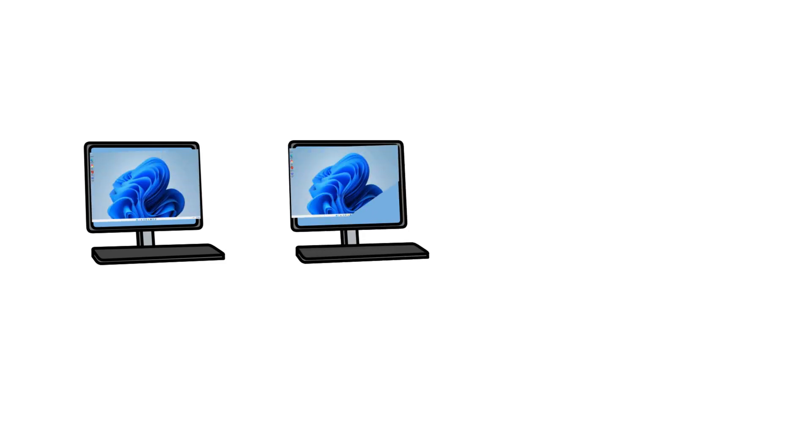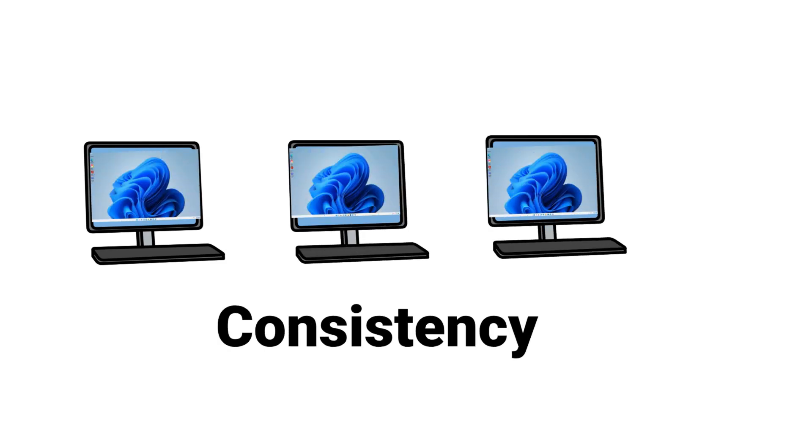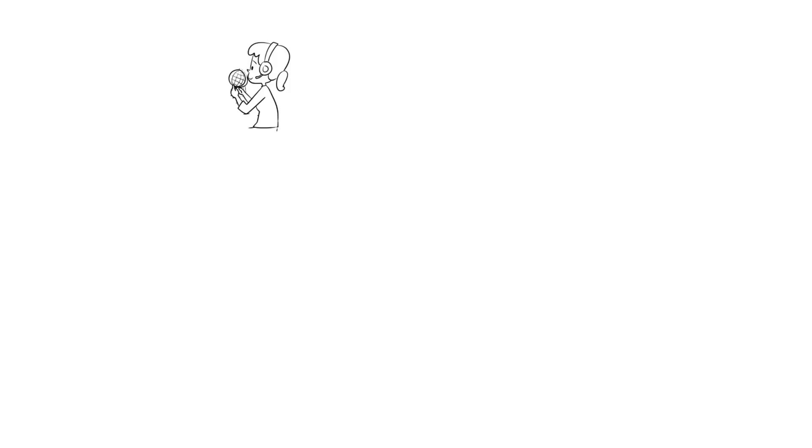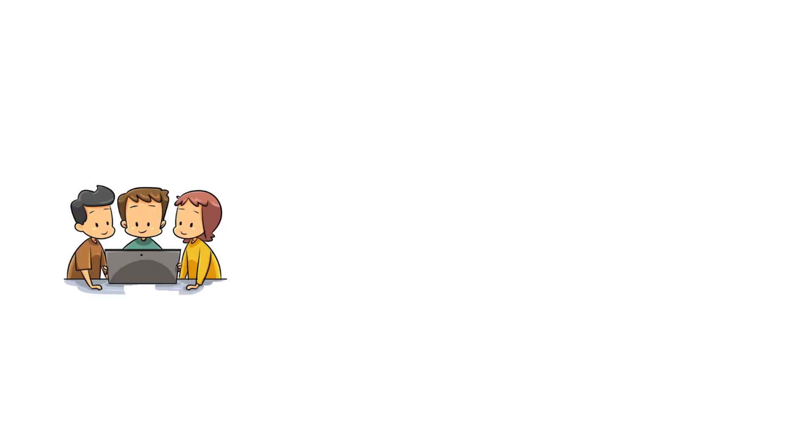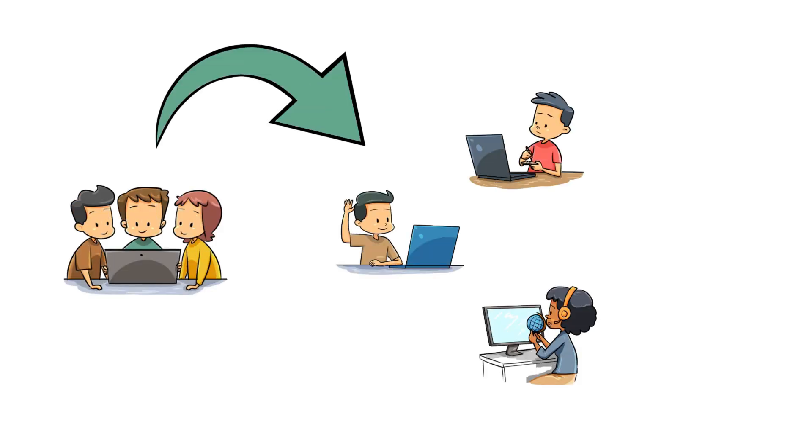Let's look at some school scenarios where Windows 365 might be very useful. Imagine a class where we want everybody using the same system setup and software for all students — we want consistency. We also want to be able to access this setup no matter where the students are, whether they're at school or at home — we want portability. Further, we don't want them to have to share hardware with other students or family members because we don't want settings overwritten or different software installed that causes problems — we want exclusivity.